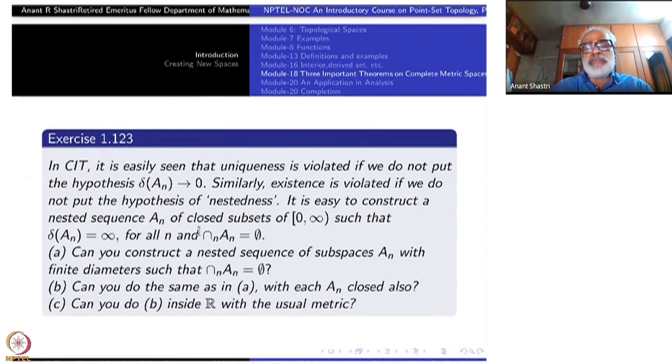It is easy to construct a nested sequence of closed sets of (0,∞). By the way, (0,∞) is complete metric space such that all the diameters are infinity. Yet the intersection is empty. So it is not going to converge to 0. They are all infinity. Intersection is empty.